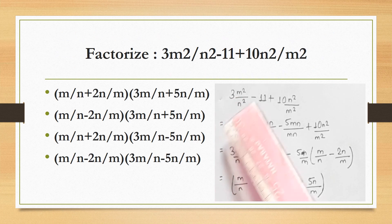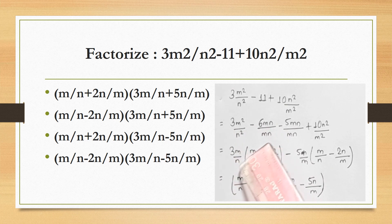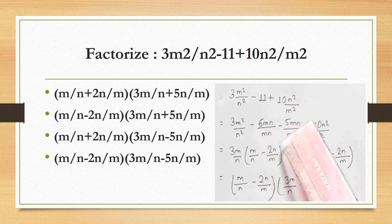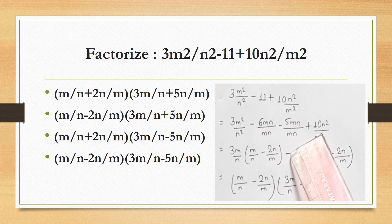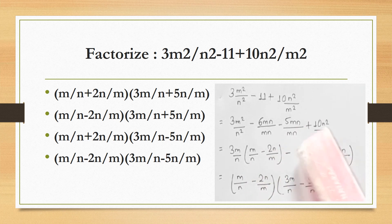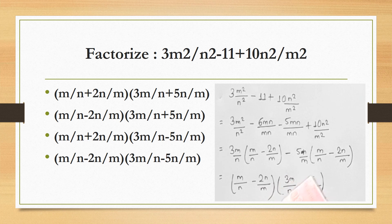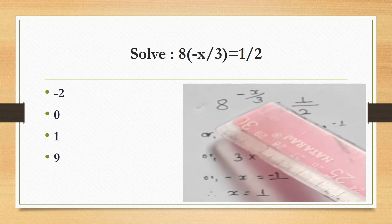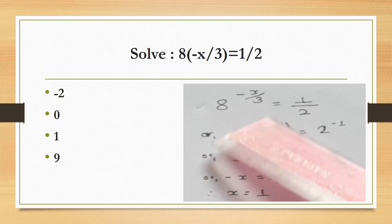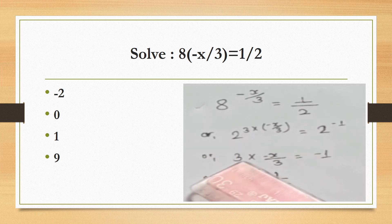Factorize: 3m squared upon n squared minus 11 plus 10n squared upon m squared. The expression is split as 3m²/n² minus 11 minus 6mn upon mn minus 5n upon mn. Taking 5n/m as common, the remaining terms give (m/n minus 2n/m). Further taking (m/n minus 2n/m) as common, the remaining bracket is (3m/n minus 5n/m). Separately, solving 8 to the power (minus x/3) equals 1/2 gives x equals 1.